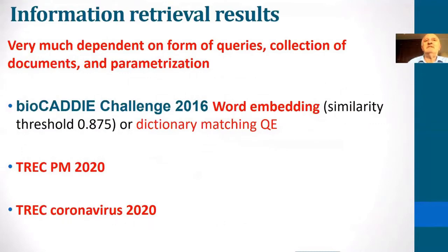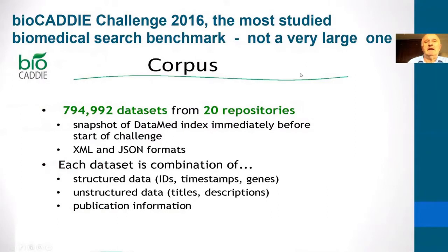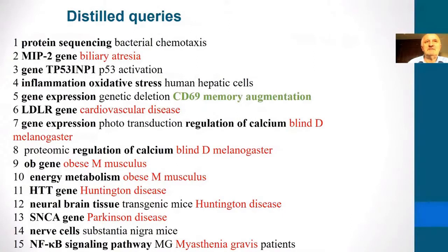Information retrieval results are very much dependent on the form of queries, collection of documents, and parametrization. Here we present results for three medical information retrieval challenges: BioCaDi 2016, Track PM 2020, and Track Coronavirus 2020. The BioCaDi challenge is the most studied biomedical search benchmark, though not a very large one — around 800 datasets from 20 curated repositories in XML and JSON formats. Here I show the distilled 15 queries for the challenge.